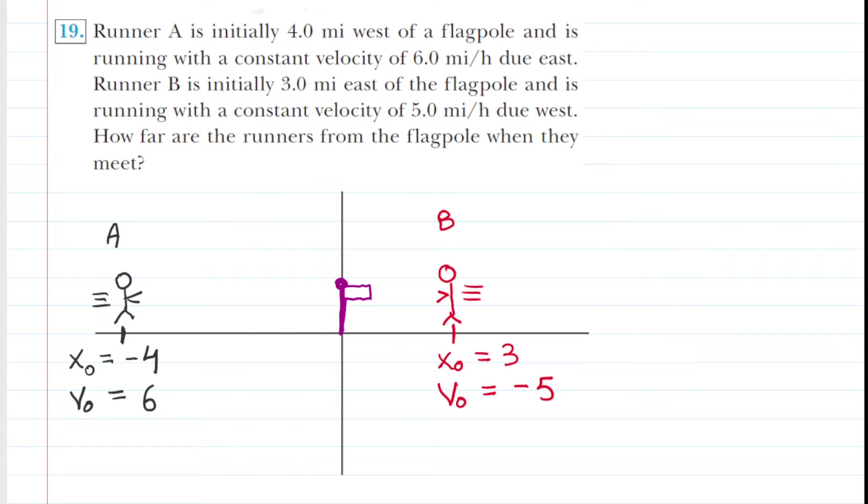We're trying to figure out how far the runners are from this flagpole when they meet together. We've drawn a picture to depict the scenario with a y and x axis, and the origin is placed at the flag. We've labeled two different people, person A and person B. Person A was said to be initially four meters west of the flagpole, so the initial x coordinate is at negative four because we've drawn that person on the left side of the origin, the negative x axis. Be careful that you understand their initial position is negative four.